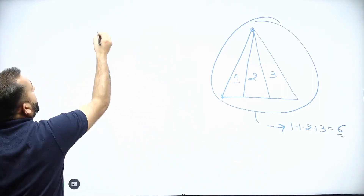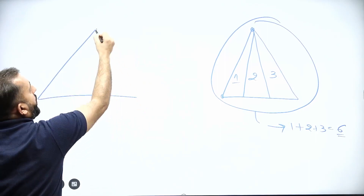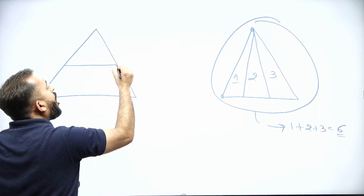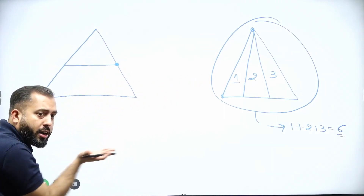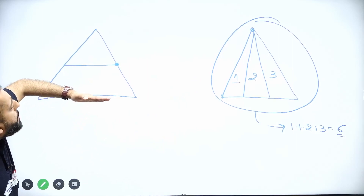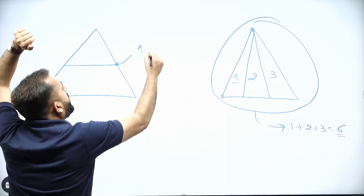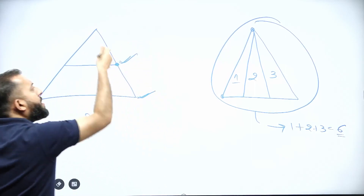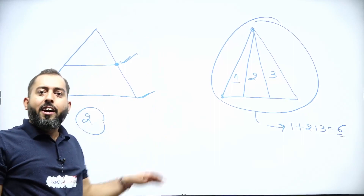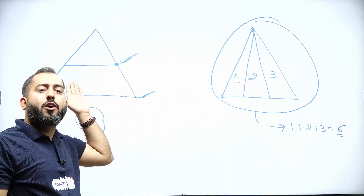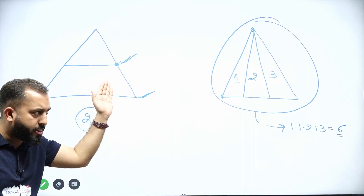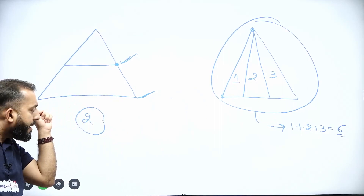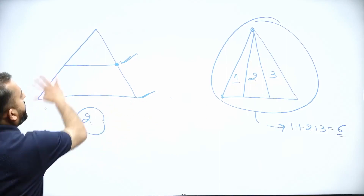Now let's talk about the second case. How many triangles are there in this shape? Count the total number of parallel lines to the ground. This is the first one, this is the second one — two lines. In this kind of situation, the number of parallel lines and the number of triangles are going to be the same.